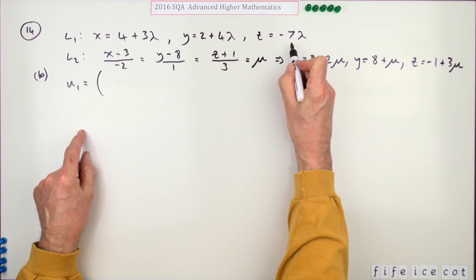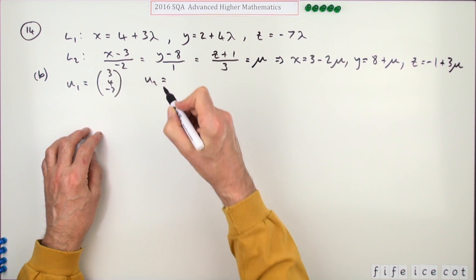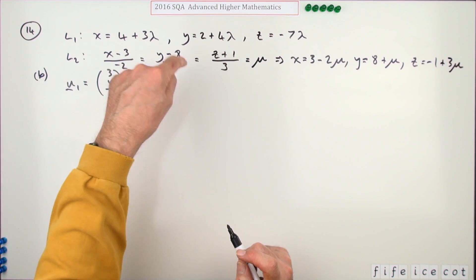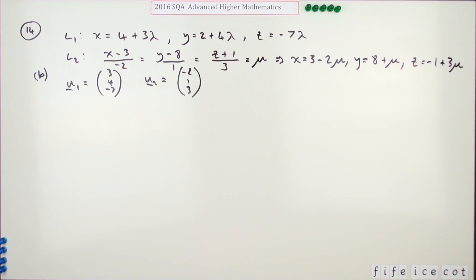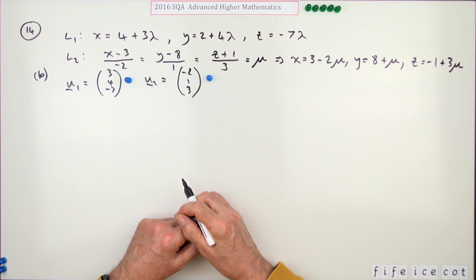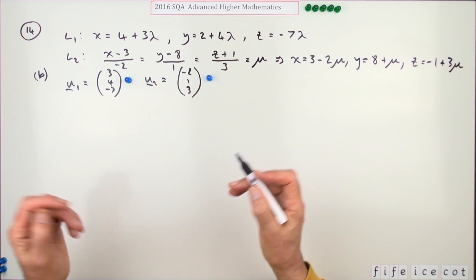u1 can be the direction vector of line 1. You can pick it out from the parameter part: u1 was 3, 4, negative 7. u2, the direction vector of this one, you can identify by these denominators: negative 2, 1, 3. There's two marks there - one mark for that one, and one mark for that one. In the marking scheme it's written as multiples of the unit base vectors i, j, k, but I don't believe that's necessary. That might just be a printing convenience rather than having to write these columns.